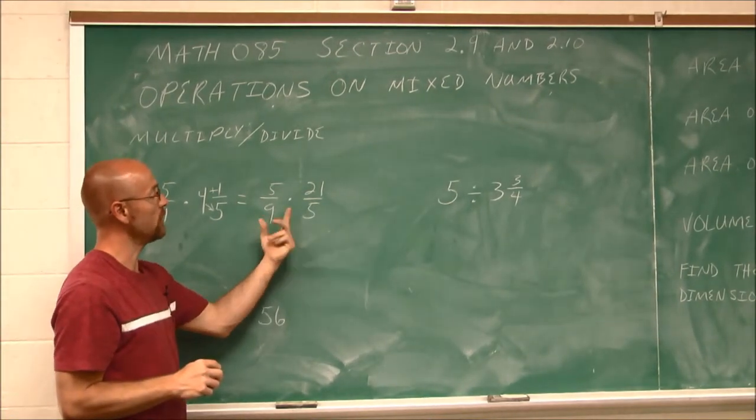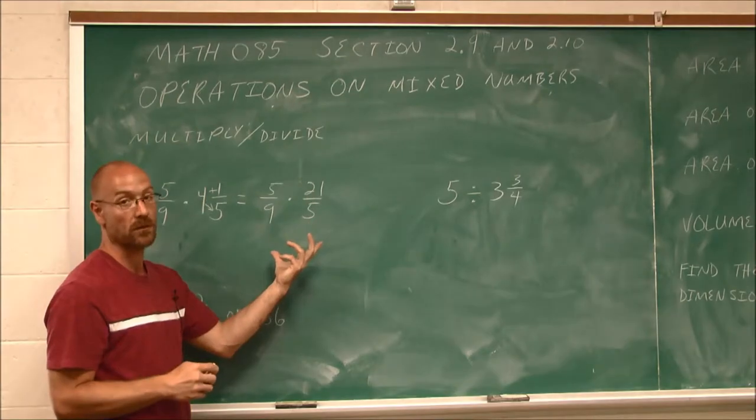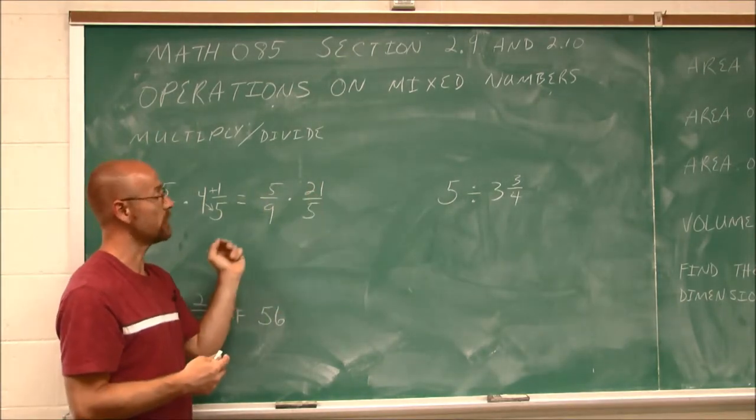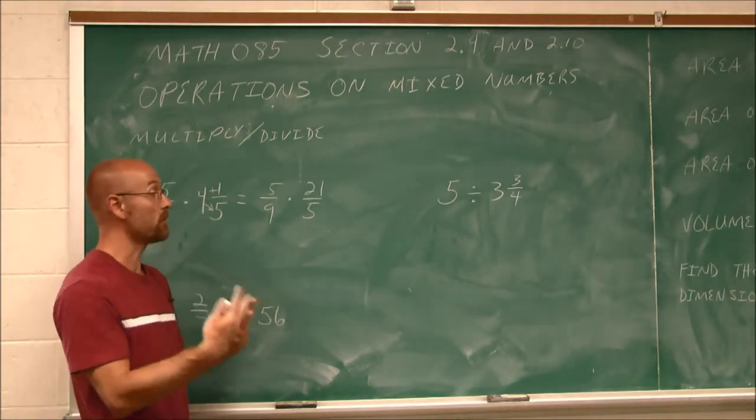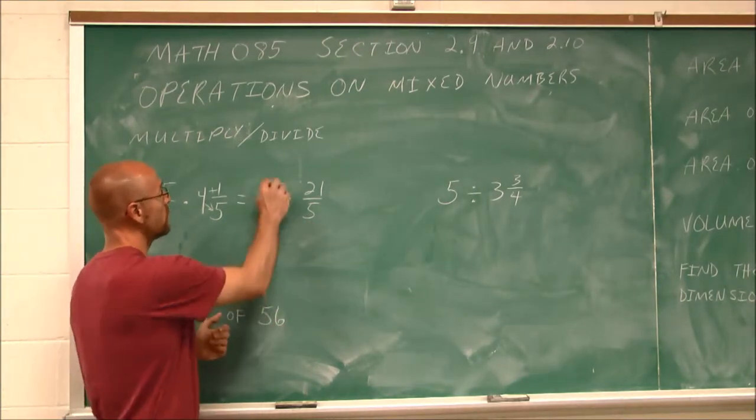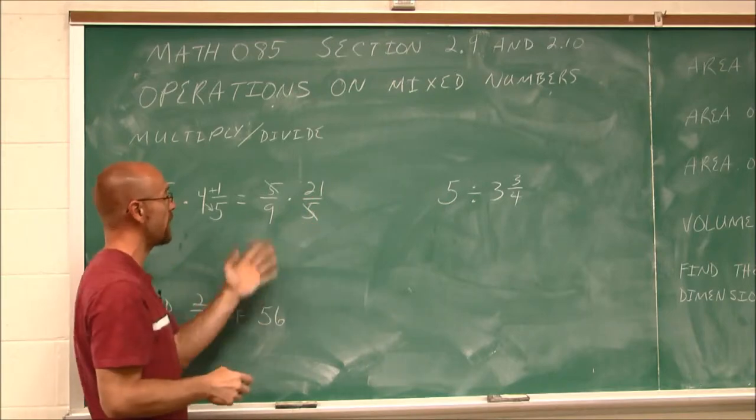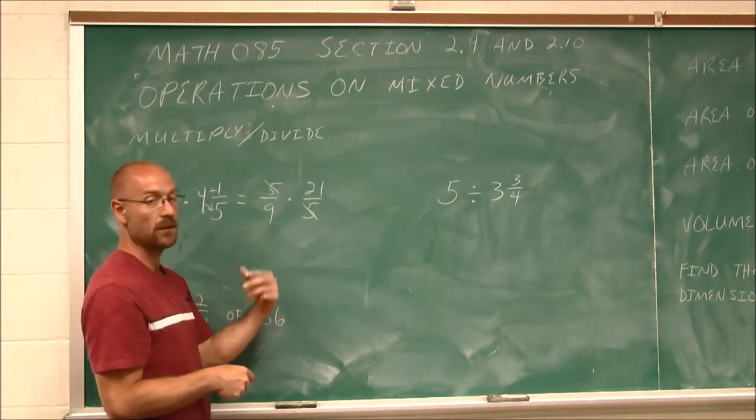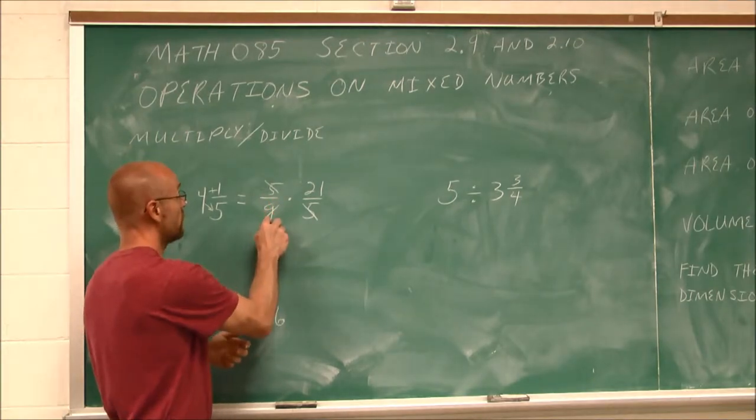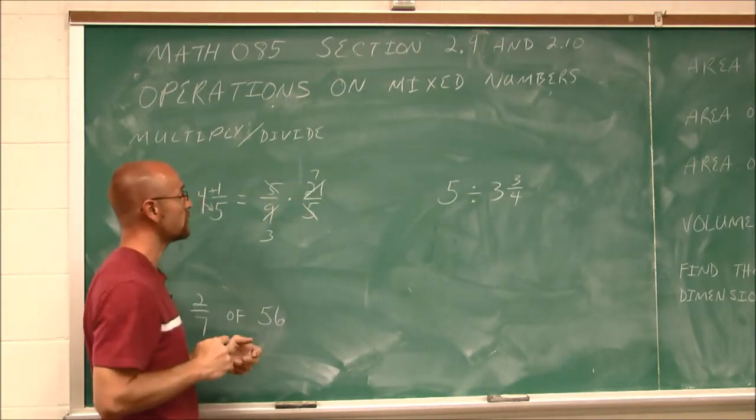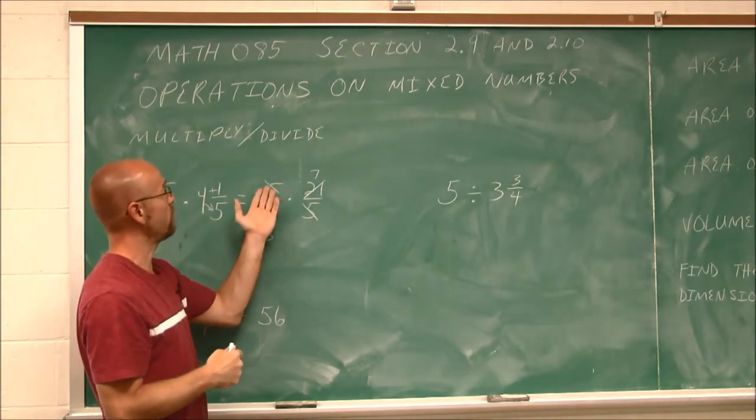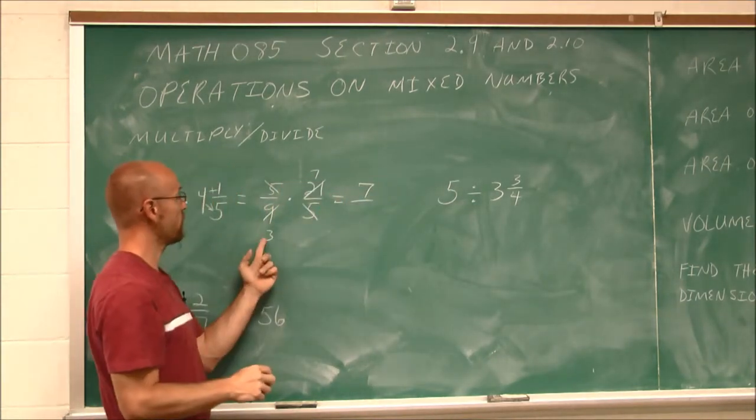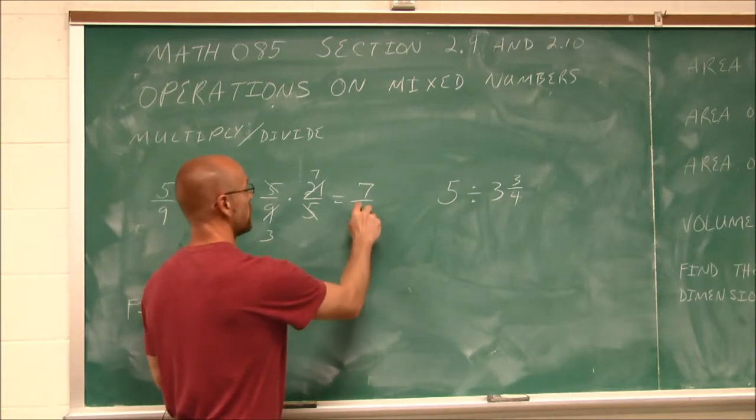From this point, we've worked with multiplying fractions before. So we can simply reduce, or we could multiply the numerators together, multiply the denominators, and then reduce. But I'm going to reduce here. I have a 5 over a 5. Anything over itself is 1. And I recognize that 9 and 21 have a common factor. 3 goes into both of these numbers. Now that I've reduced it, I have 1 times 7, which is just 7. And I have 3 times 1, which is just 3.